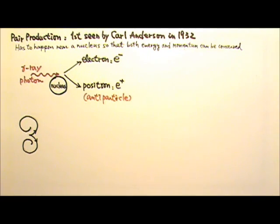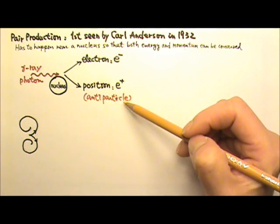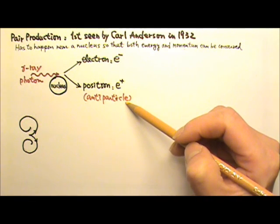By the way, the antiparticle positron was predicted by Dirac in 1928.